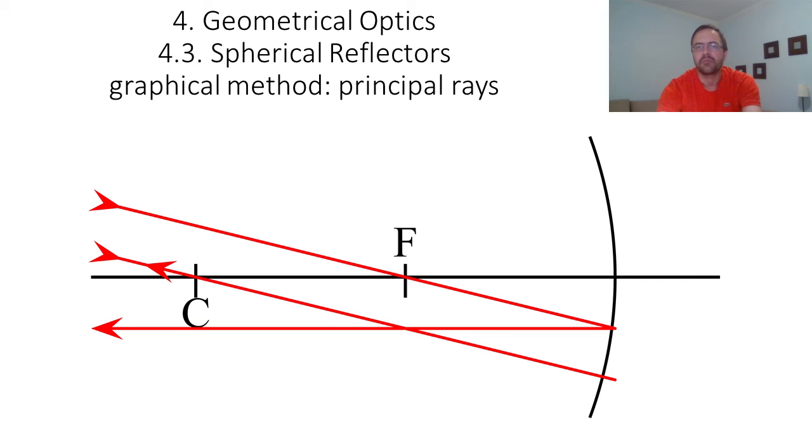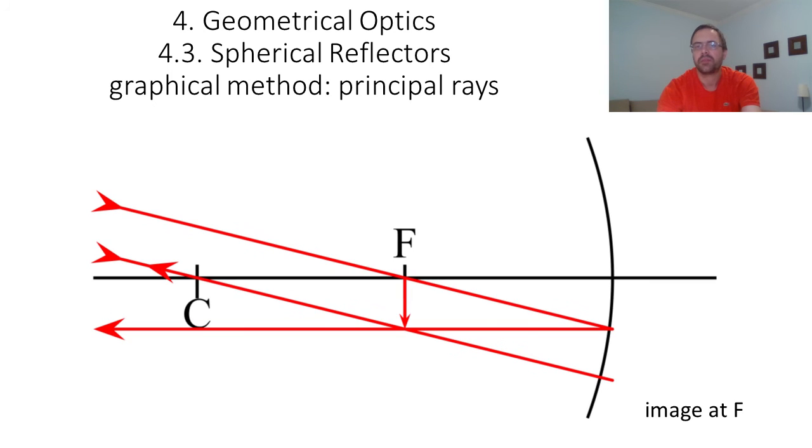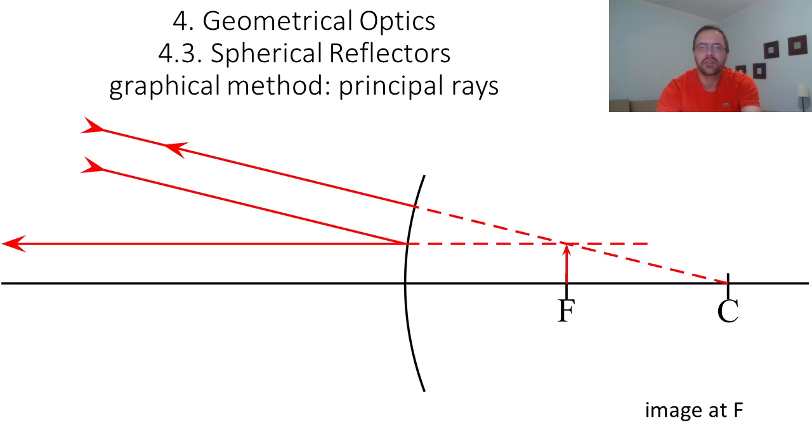Since we only need two rays to find the location of the image, you see that the image is formed exactly at the position of the focal point f. In fact, the same result can be obtained with a convex mirror. The image for an object at infinity in a convex mirror is formed at the focal point f.